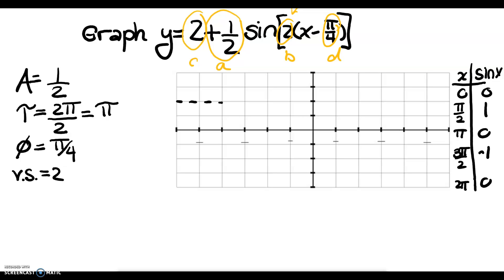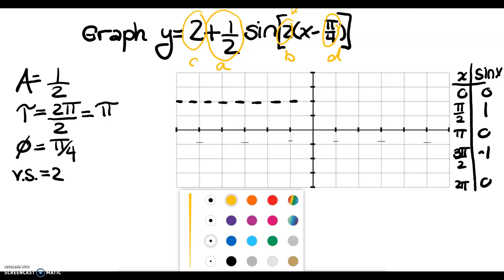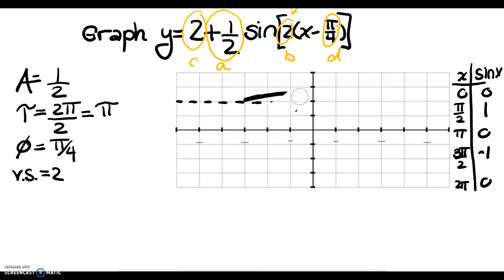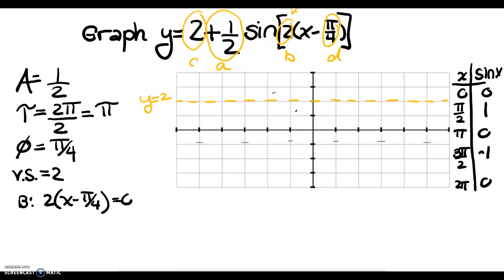So I'm going to mark off my vertical shift right off the bat — y equals 2. Let's get down to solving for the beginning. I'm going to set 2 times x minus pi over 4 equal to 0. When I divide by 2, I get x minus pi over 4 equals 0, so x equals pi over 4. So we're going to start at pi over 4.